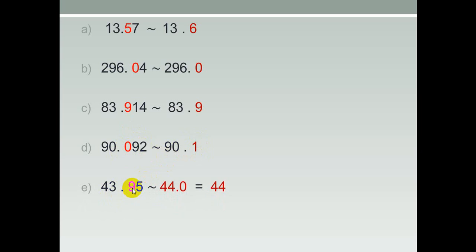E: 43.95. Where is the tenths? Tenths is nine. Look to the next digit: five. Five and more is a strong number. Add one to nine. Nine plus one equals ten. Write zero and carry one up to three — it will be four. The answer is 44.0. Zero in the decimal part is nothing, so it will be 44.